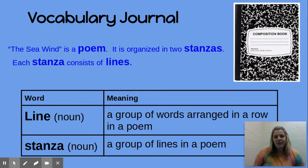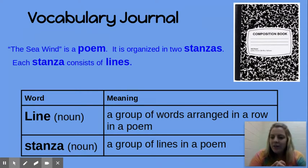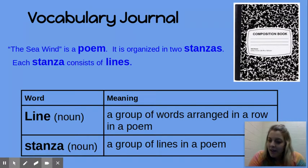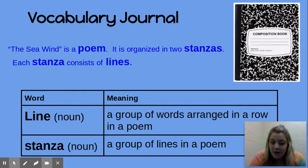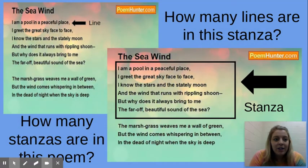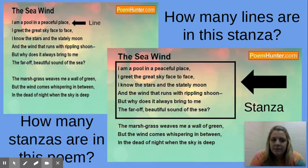Now we're going to shift our focus and talk more about The Sea Wind as a poem. The Sea Wind is a poem organized into two stanzas, and each stanza consists of lines. A line is a group of words arranged in a row in a poem. A stanza is a group of lines in a poem. As we take a look at our poem, how many lines do you see in that first stanza? And then how many stanzas are in this poem?